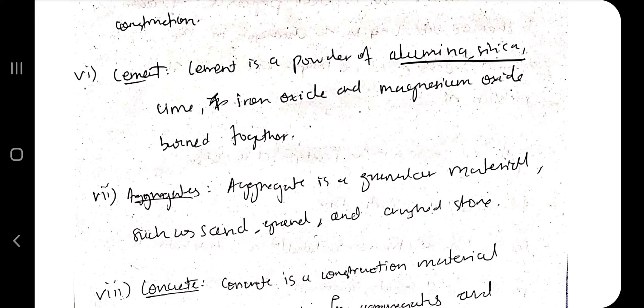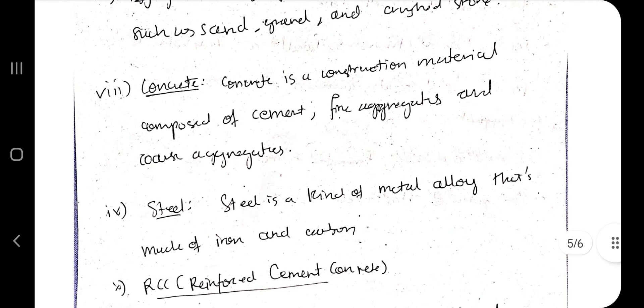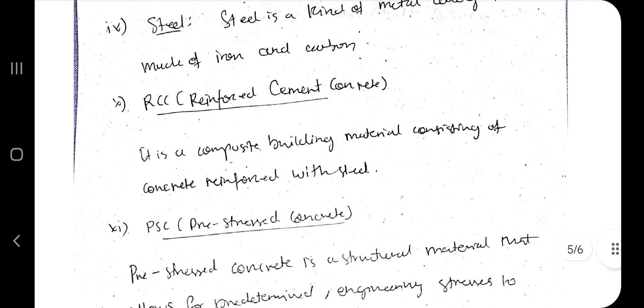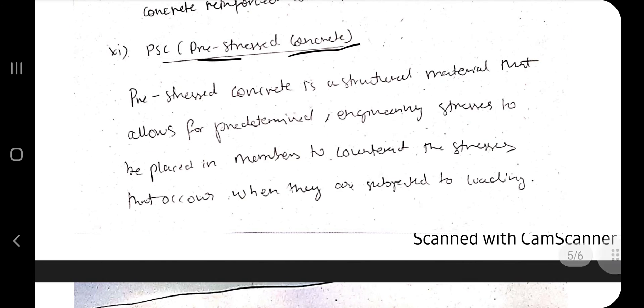Cement is a powder of aluminum silica used for construction of buildings. Aggregates are granular materials like sand, gravel and crushed stone. Concrete is a construction material composed of cement. Steel is an alloy material made of iron and carbon. Reinforced cement concrete (RCC) is the combination of concrete material and steel.